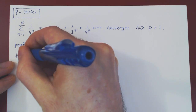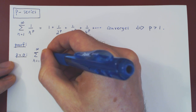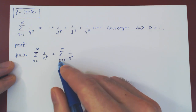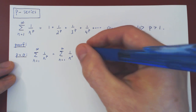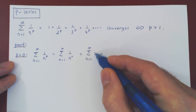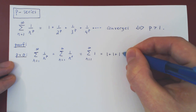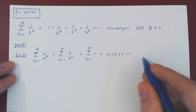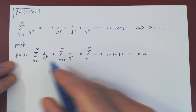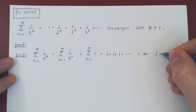The case p equals 0: for any positive integer n, n to the 0 is simply 1, so the series ends up being 1 over 1, which is simply 1. We are trying to add 1 as n ranges from 1 to infinity, so we're adding 1 an infinite number of times. The result clearly blows up to infinity. Therefore, the series clearly diverges.